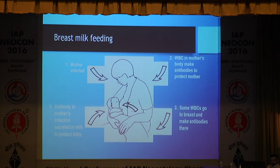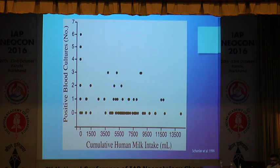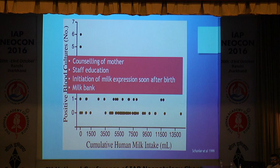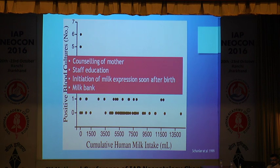Another important intervention, which all of us know, is breastfeeding. If the mother is breastfeeding, her mammary glands will secrete antibodies against organisms to which both baby and mother are exposed, and the baby gets a kind of vaccination against common pathogens. Studies have shown that the higher the cumulative amount of breast milk intake, the lower the chances of getting a positive blood culture. How to improve breastfeeding rates in NICUs: a four-step model can help. This includes counseling of mothers in the antenatal period and immediately after delivery, education of staff regarding methods of breastfeeding, initiation of milk expression soon after delivery — ideally within the first 24 hours, and if the mother cannot come, a pump can go to her. Finally, establishing a milk bank if possible.